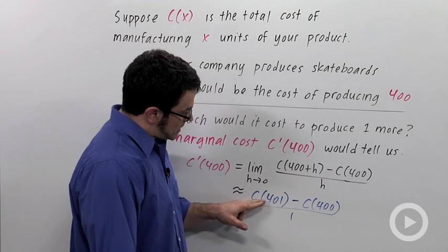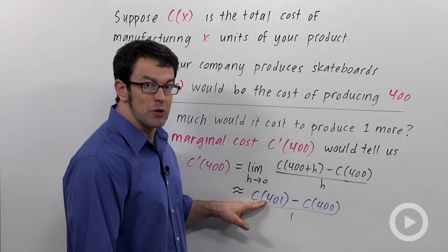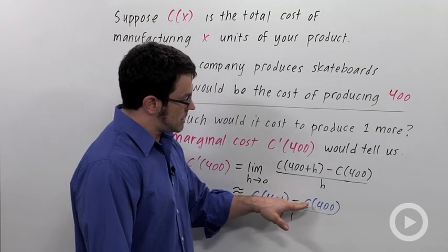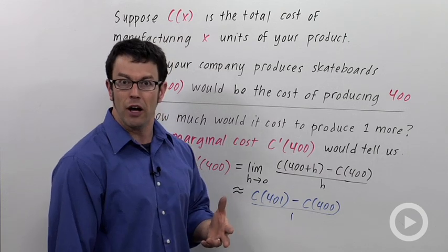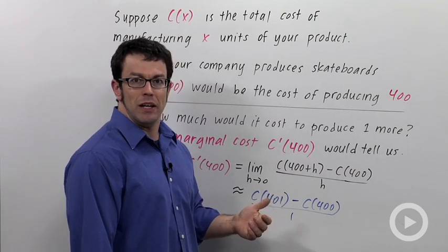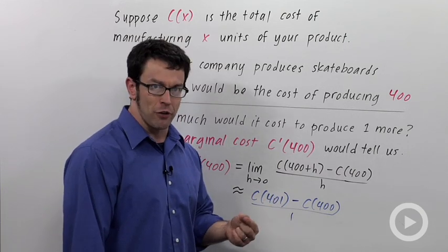Now if you look at what the numerator is, C of 401, that's the cost of producing 401 skateboards. C of 400 is the cost of producing 400. The difference would be the cost of producing that 401st skateboard.